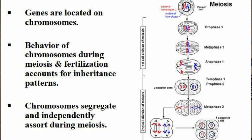Coming back to the chromosomal theory of Sutton and Boveri — now that we understand meiosis, let us discuss their theory. Sutton and Boveri stated: chromosomes carry genes and are in pairs, just as Mendel said factors are in pairs. Similarly, homologous chromosomes are in pairs. At gamete formation, chromosomes separate — which is also correct. The chromosomes assort independently into gametes, and fertilization restores the paired condition of chromosomes. That is the theory of Sutton and Boveri.